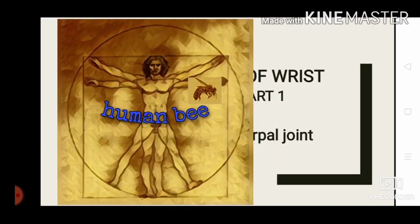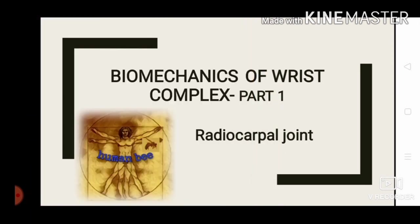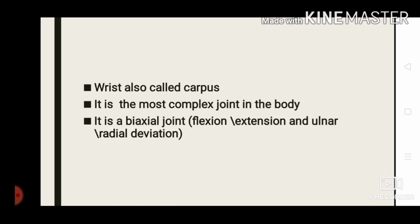Hello friends, welcome to Human-B. We are starting biomechanics classes with wrist biomechanics. Today we are going to discuss the radiocarpal joint. The wrist is also called the carpus and it is the most complex joint in the body. It is a biaxial joint, meaning it has two degrees of freedom. The motions are flexion and extension, occurring around a coronal axis, and ulnar deviation and radial deviation, occurring around an anteroposterior axis.